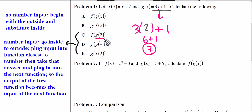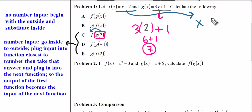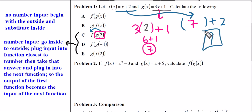This 7 is not the final answer — it only represents G of 2. Now this value has to go inside of F. We prepare F(x), which is X plus 2, making room to plug in the 7 we got. Substituting, 7 plus 2 equals 9. Remember: we put 2 inside function G, get an answer, then put that answer into F. So F of G of 2 equals 9.